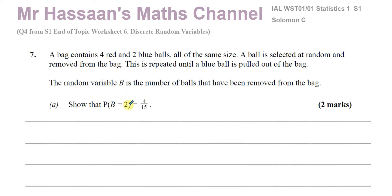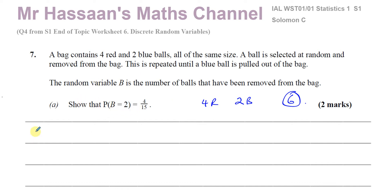We need to show that the probability that B equals 2 is 4 over 15. So there are 4 red and 2 blue balls — 6 balls altogether. A ball is taken out and not replaced, and this is repeated until a blue ball is pulled out. So the probability that B equals 2 means: pick a red first, then a blue second.